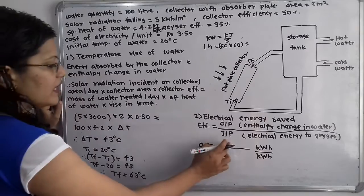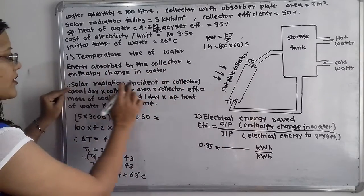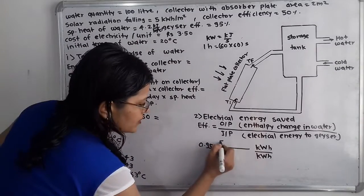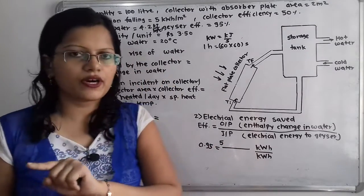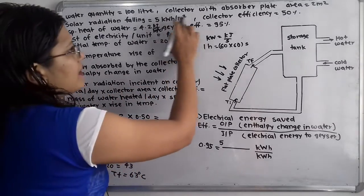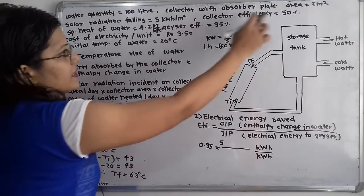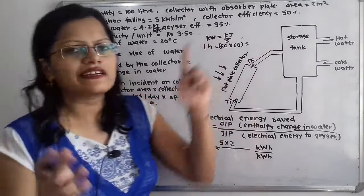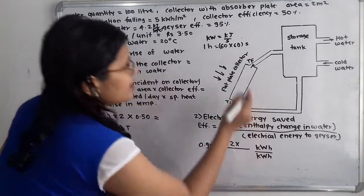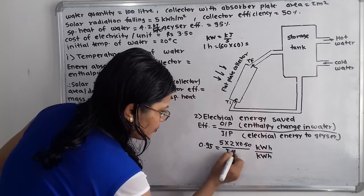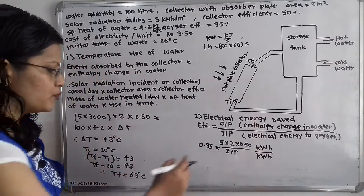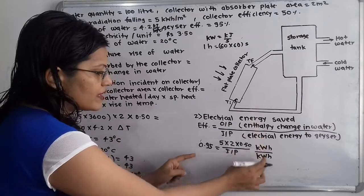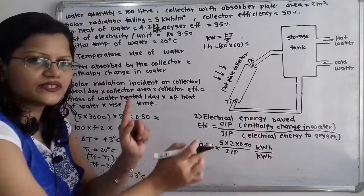So I write the output: energy absorbed by the collector equals solar radiation incident 5 kilowatt hour per meter square, multiplied by collector area 2 meter square — this cancels the meter square units — then multiplied by collector efficiency 50%, that is 0.50, divided by input. This equation is correct because on both sides the kilowatt hour units cancel and we equate to efficiency which has no unit.